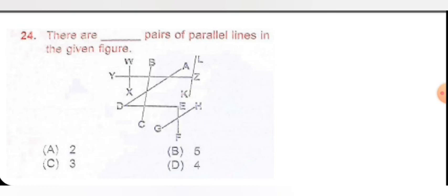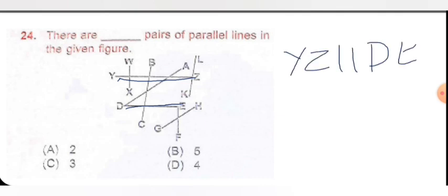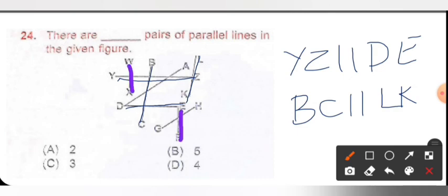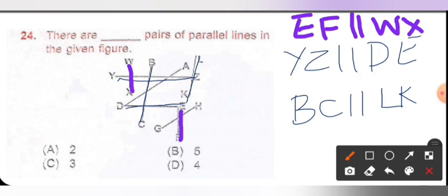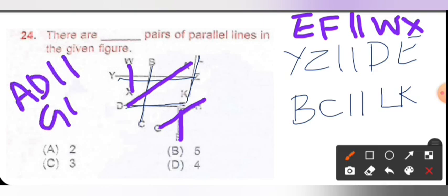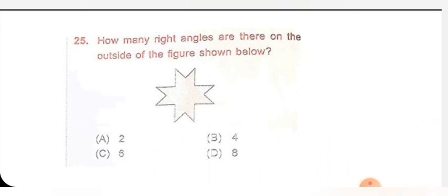Question number 24: there are dash pairs of parallel lines in the given figure. Let's find out how many parallel lines there are. First pair: YZ parallel with DE. Next: BC parallel with LK. Now EF parallel with WX. One more: AD is parallel with GH. So how many pairs are there? One, two, three, four. Option D is correct. Next question: how many right angles are there on the outside of the figure? Counting: 1, 2, 3, 4 — and then more: 1, 2, 3, 4 again — that gives 8. Option D is the correct option.